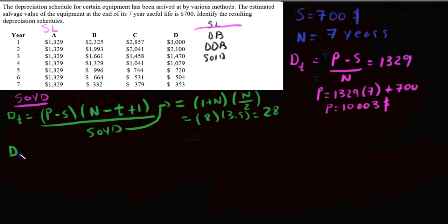So let's just evaluate at year one, see what we get. So 10,003 minus 700 multiplied by 7 minus 1 plus 1, so we have multiplied by 7, over 28. And doing this calculation gives us a value of 2325, and that is for year one, the amount of depreciation, which corresponds to column B, because year one, same value. So now we know that this is obtained by the SOYD method, the whole column.